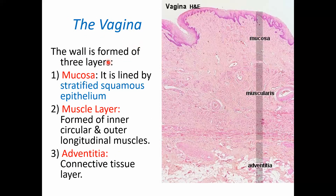The vagina is made up of three layers. The mucosa is lined by stratified squamous epithelium with lamina propria. The muscle layer has inner circular and outer longitudinal layers. The adventitia is a connective tissue layer.